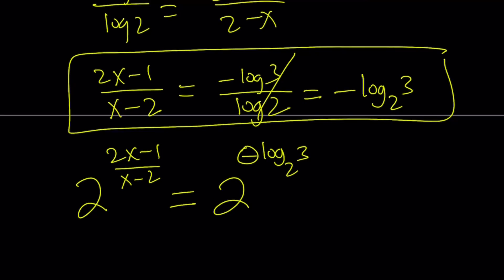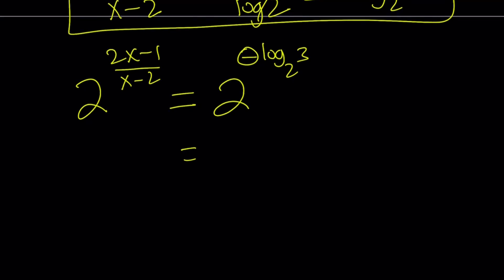How can I simplify this? Notice that this is negative 1. This can be multiplied by the, this can become a power. So you can write it as 2 to the power log of 3 to the power negative 1 with base 2. And then,